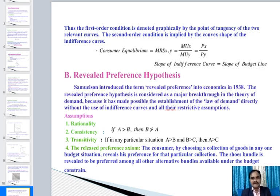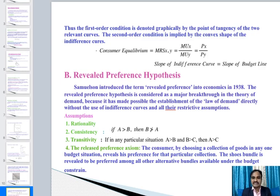Next we discuss another important theory: the revealed preference hypothesis. Samuelson introduced the term 'revealed preference' into economics in 1938. The revealed preference hypothesis is considered a major breakthrough in the theory of demand because it made possible the establishment of the law of demand directly, without the use of indifference curves or their stringent assumptions.